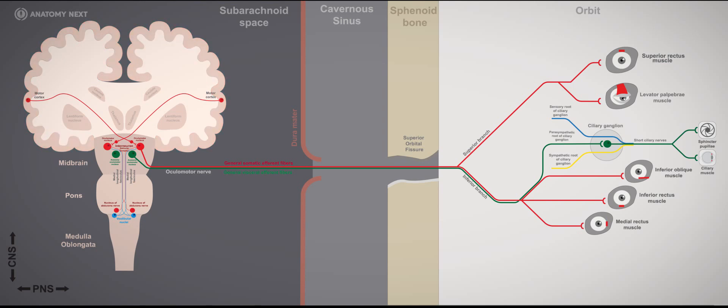Thus, we can say that the oculomotor nerve has a central part, meaning the connections it has in the central nervous system, and a peripheral part, which is the visible nerve as a part of the peripheral nervous system.